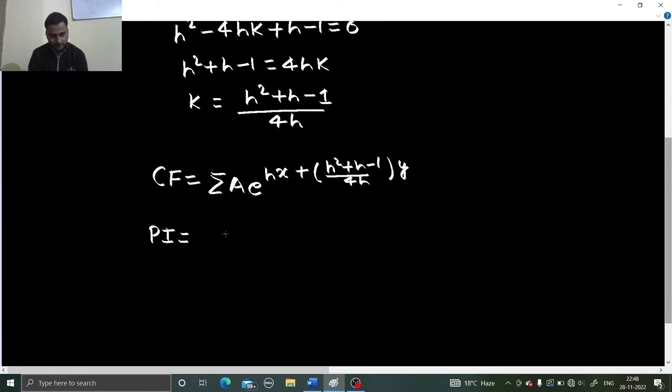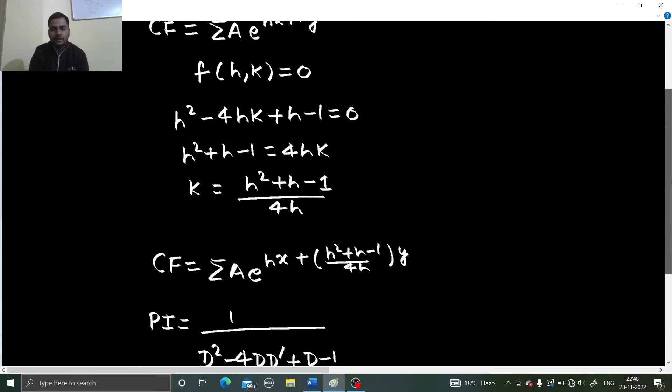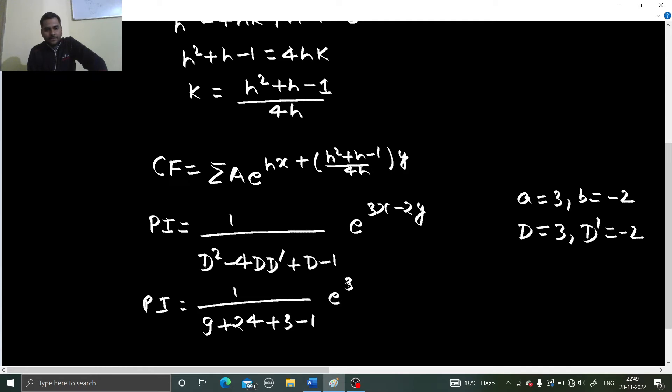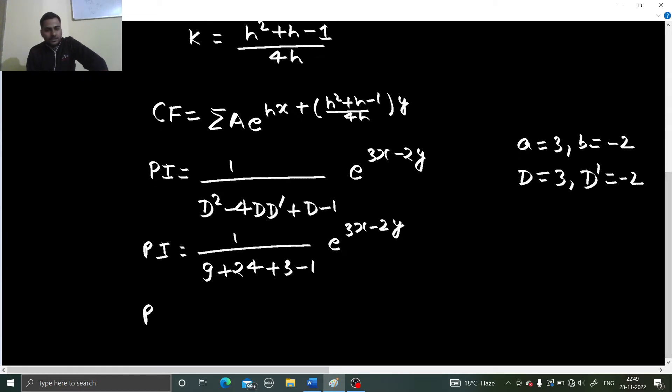The particular integral that will be 1 upon f of d which is d square minus 4 d d dash plus d minus 1 and that will operate on e power 3x minus 2y. So here if you compare this to e power ax plus by so a is 3 and b is minus 2, put d as 3. d as 3 so 9, d d dash will be minus 6 into minus 4 so plus of 24 and d will be 3 and minus 1 e power 3x minus 2y. So 33, 36 minus 1 is 35. There you get your pi as 1 upon 35 e power 3x minus 2y.